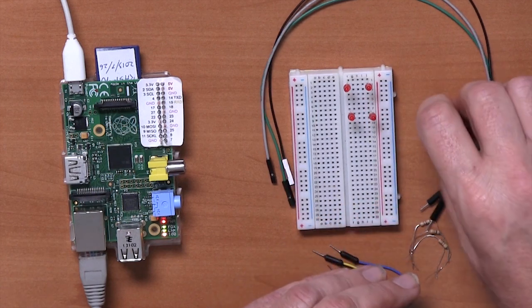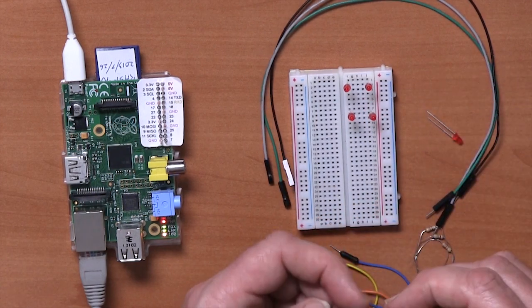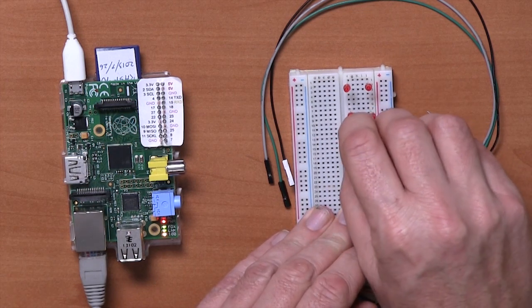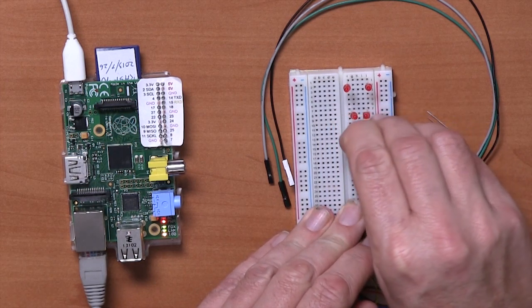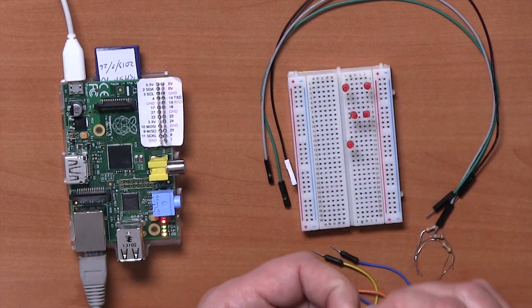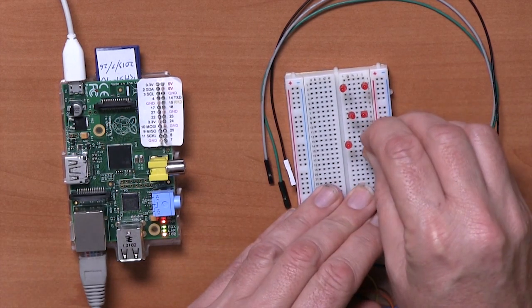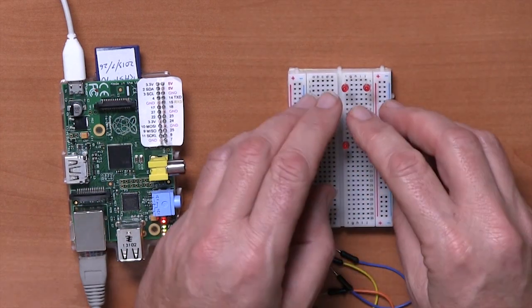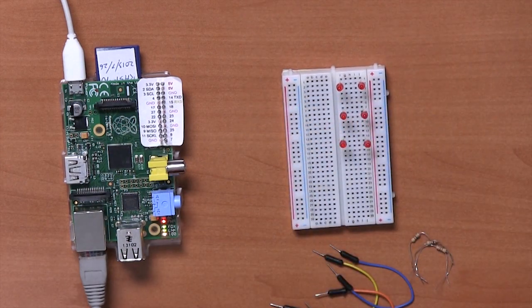Go a bit further down the breadboard and do the same thing again. So we have the positive like that. Let's go a bit further and then they're evenly spaced like that and then this one like that. Okay, so that's the LEDs in the right place.